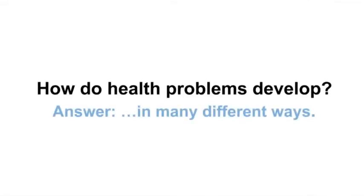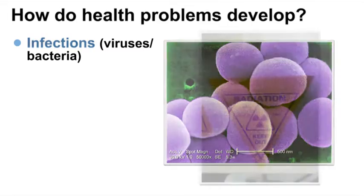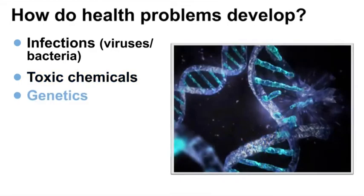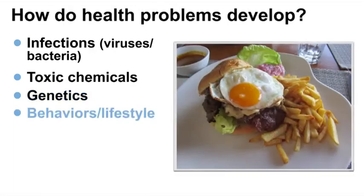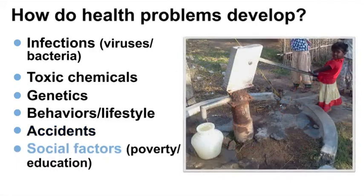Health problems can develop in many different ways. Infections may enter the body from the outside, such as viruses that cause the common cold or bacteria that cause strep throat. People may be exposed to toxic chemicals such as lead or arsenic through their environment or job. An individual's genetic makeup may lead to improper growth, function, or maintenance of body systems — for example, type 1 diabetes. Behaviors or acquired risk factors such as smoking, alcohol abuse, inadequate exercise, psychological stress, and poor diet may all contribute. Health problems can also develop from accidents, such as head trauma from a car accident or a fall. Social factors such as poverty and lack of education can expose populations to risks like unsafe drinking water or prevent people from obtaining adequate medical care.